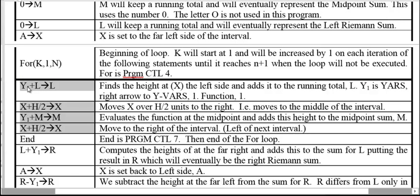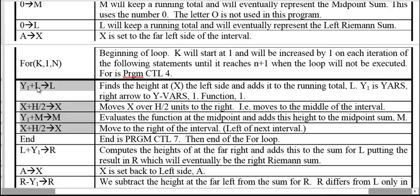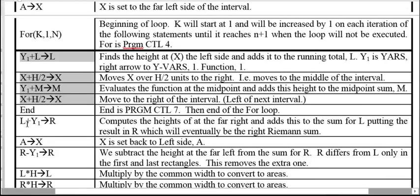Now it finds the height at the new X — the left end of the second interval — and adds it to L. Then it moves half an interval again to find the midpoint height and adds that to M. This continues through all N intervals, so when the loop finishes, L is the sum of all the heights at the left endpoints, and M is the sum of all the heights at the midpoints.